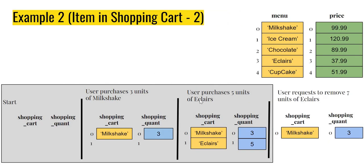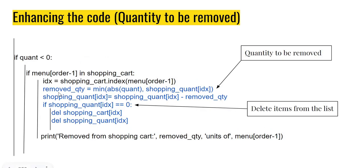Instead, I'm going to remove a quantity equal to the minimum of `abs(quant)` and `shopping_quant[idx]`. Going back to our earlier example: `shopping_quant[idx]` is five, the user ordered minus seven, `abs(-7)` is seven, and the minimum of seven and five is five — so we remove five units from the shopping cart.